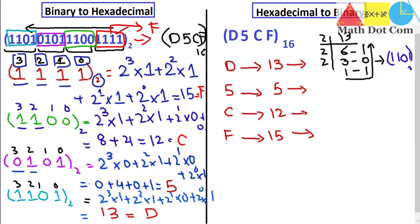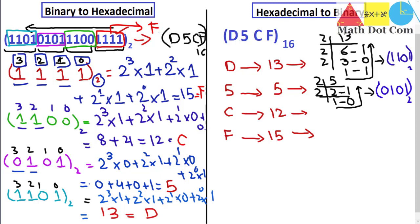Similarly, for 5: 5 ÷ 2 = 2 remainder 1; 2 ÷ 2 = 1 remainder 0; 1 ÷ 2 = 0 remainder 1. Reading from bottom to top gives 101, but it must be 4 digits, so we add a leading 0. The binary equivalent of 5 is 0101.